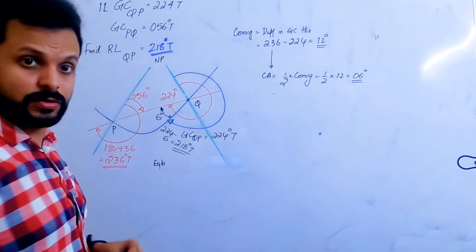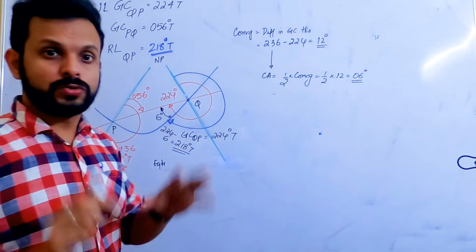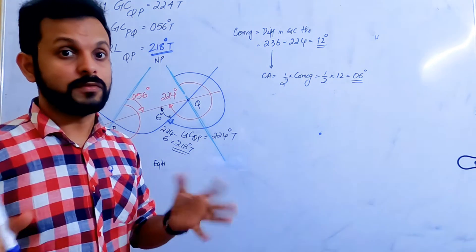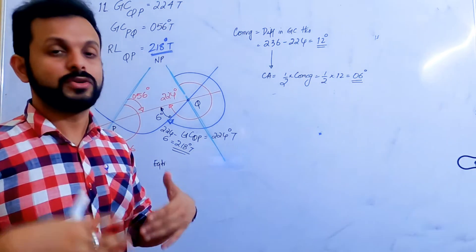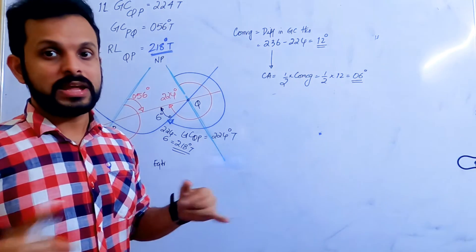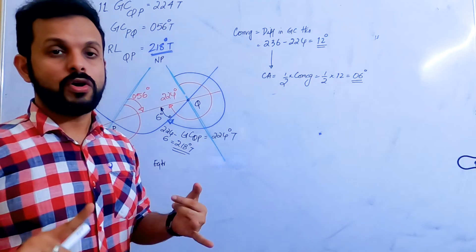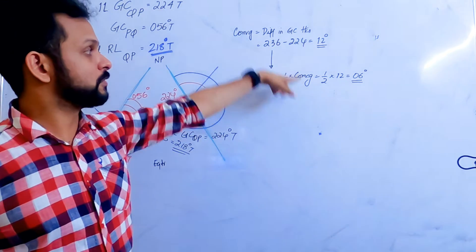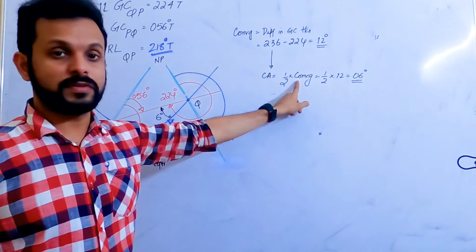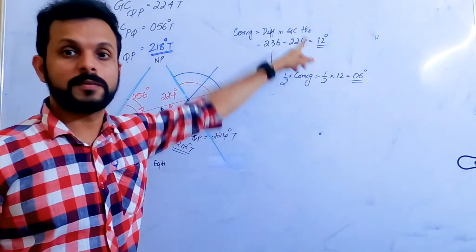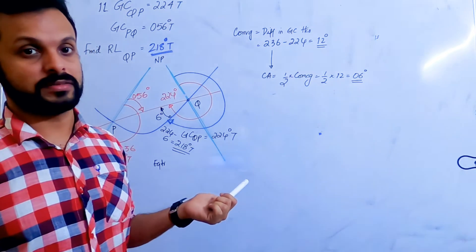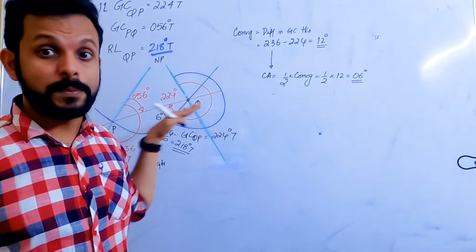So we used the third method of finding convergency. Always think about three methods — you will get one of them for sure. Either use the equation, or conversion angle is half of convergency, or convergency is the difference in great circle tracks. Here we employed the difference in great circle tracks in a particular direction.